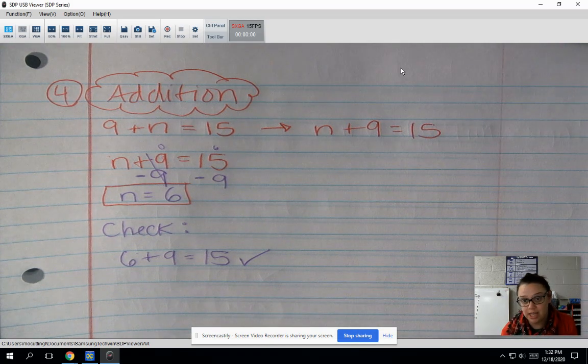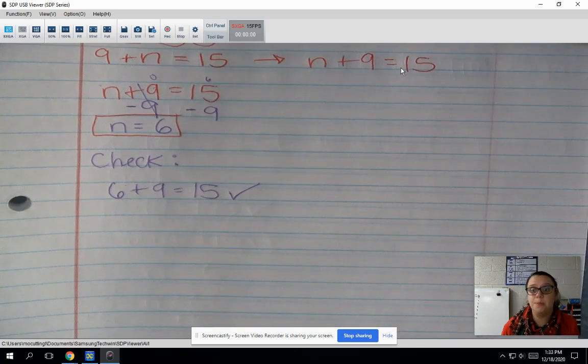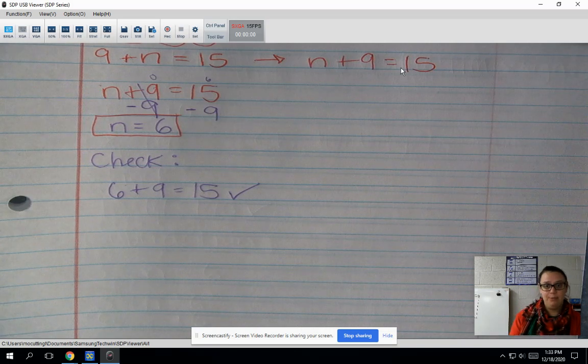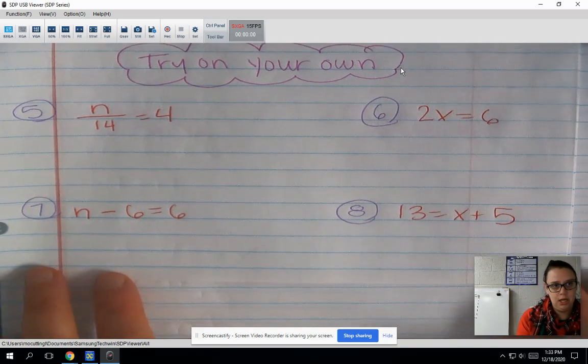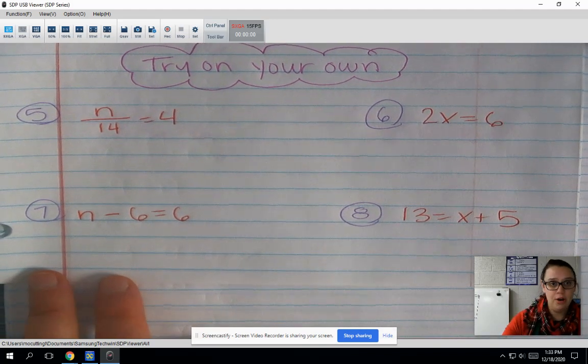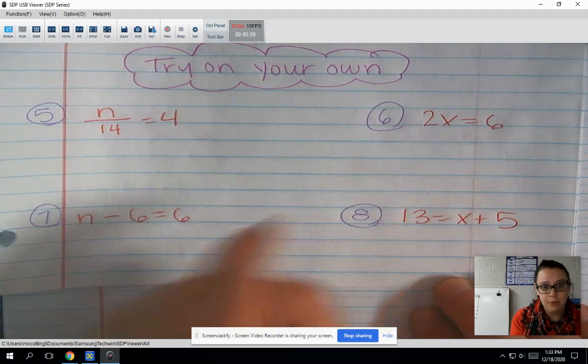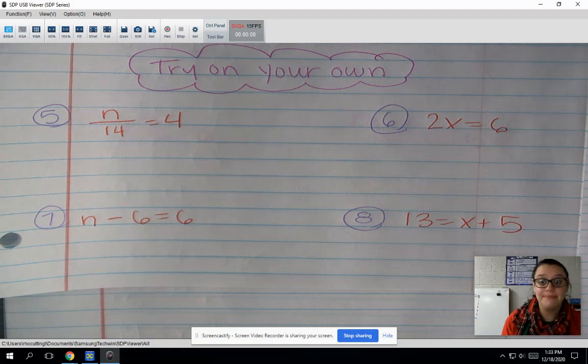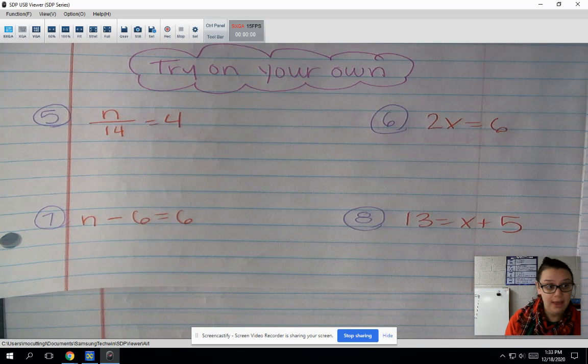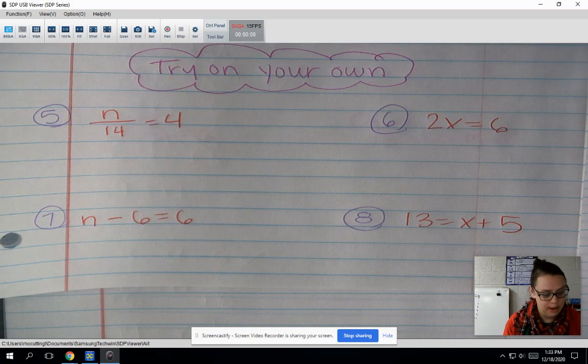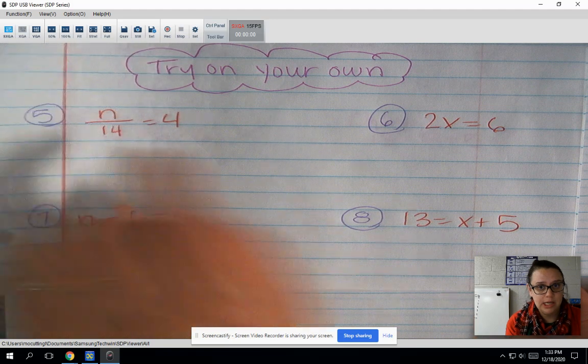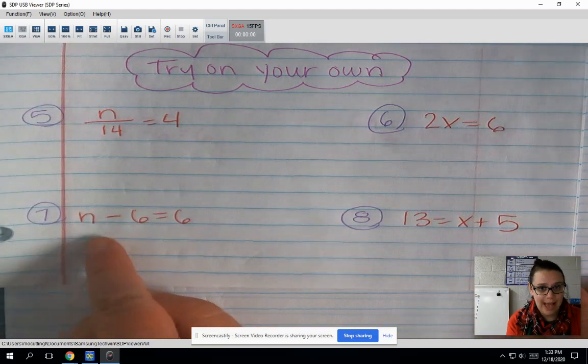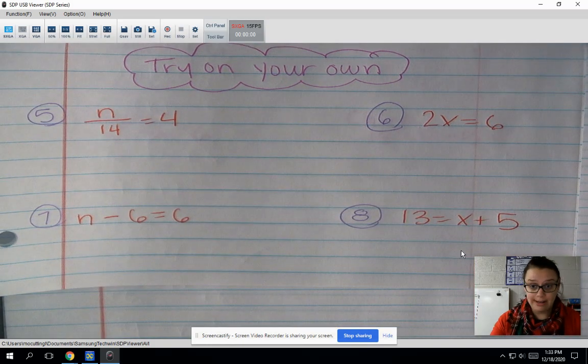And then I have four problems that you are going to try on your own. So when you come to class tomorrow, these should not be blank. I'm going to just put them up on my screen. So you're going to label this try on your own. You're going to pause this video to write down these four problems. And then you're going to try them on your own. You're going to come back to class with those done. So you're going to go through all the steps we just did in our examples. So use the notes you just took. So this first one, we have n divided by 14. This is 2 times x. This is n minus 6. And this is x plus 5. So you're going to finish those. And I will see you next time.